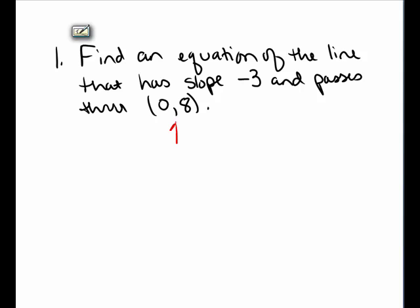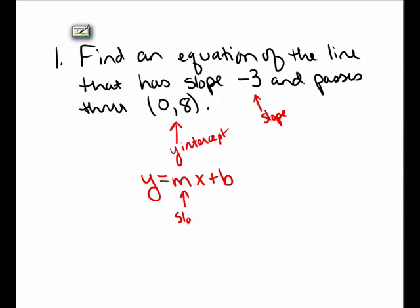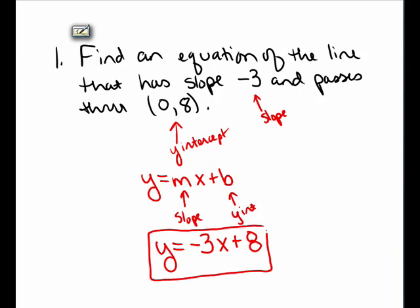We've been given the y-intercept. I know this point is the y-intercept because the x value is 0. So I know the y-intercept, and I know the slope of the line is negative 3. So I will select to use the slope-intercept form of a line: y = mx + b. m stands for the slope and b is the y-intercept. So all I need to do is plug those values in — m is negative 3, and b is 8. The equation of the line with slope negative 3 and y-intercept 8 is y = -3x + 8.